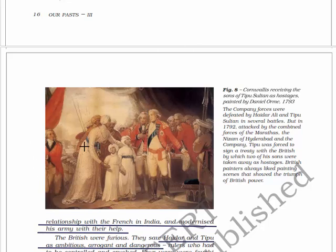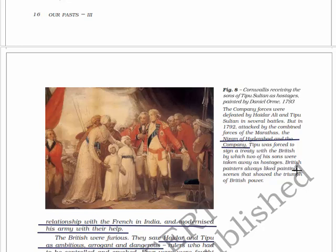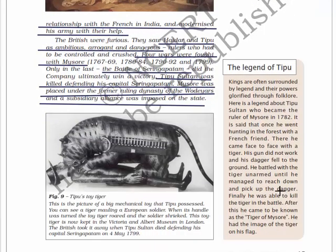Here you will see the figure: 'Cornwallis receiving the sons of Tipu Sultan as hostages,' painted by Daniel in 1793. The company forces were defeated by Hyder Ali and Tipu Sultan in several battles, but in 1792, attacked by the combined forces of the Marathas, the Nizam of Hyderabad, and the company, Tipu was forced to sign a treaty with the British by which two of his sons were taken away as hostages. British painters always liked painting scenes that showed the dream of British power.